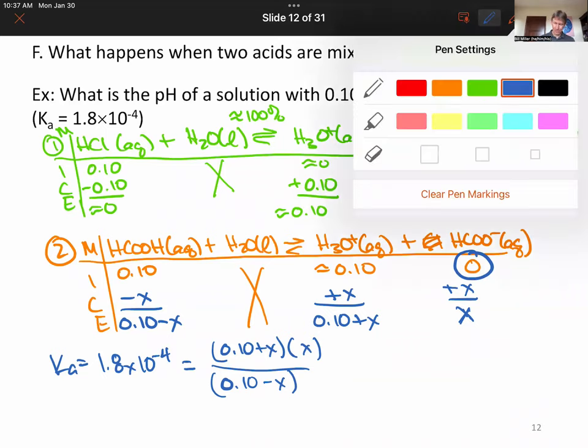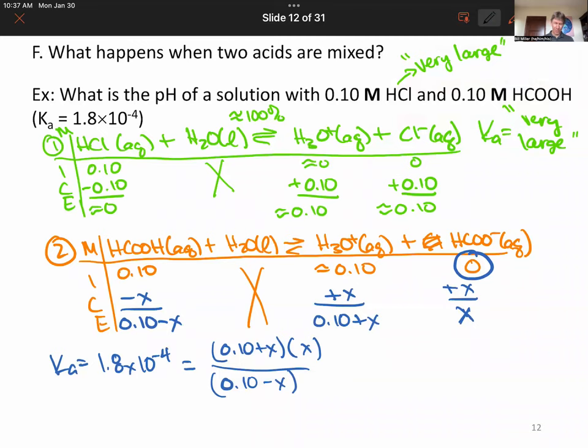1.8 times 10 to the minus 4, that's right on the cusp. It turns out that when you have X in the numerator and X in the denominator that they will be small. That means that this is just 0.10 over 0.10, which we can cancel out. And X equals 1.8 times 10 to the minus 4, which is the concentration of formate right there.